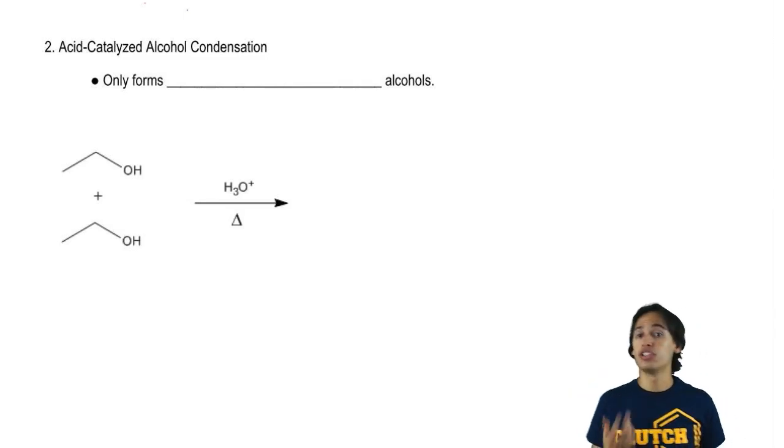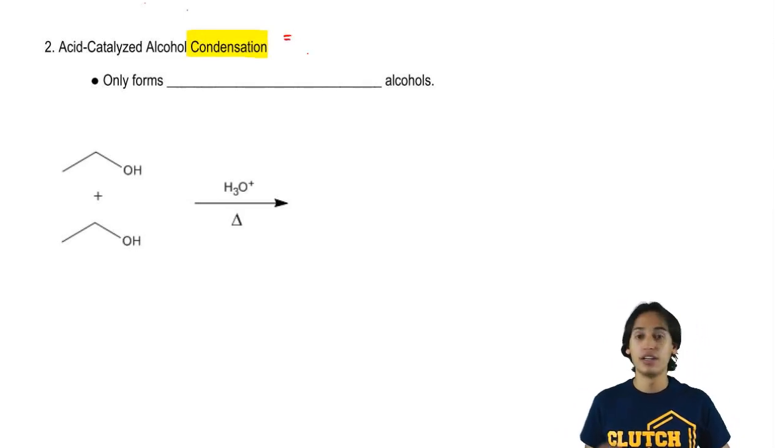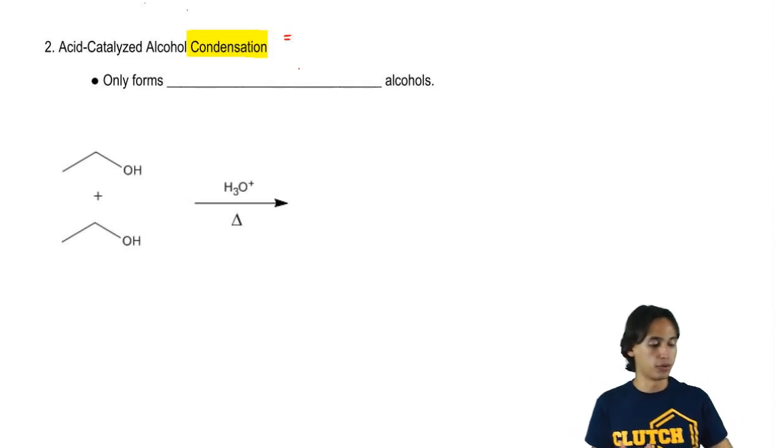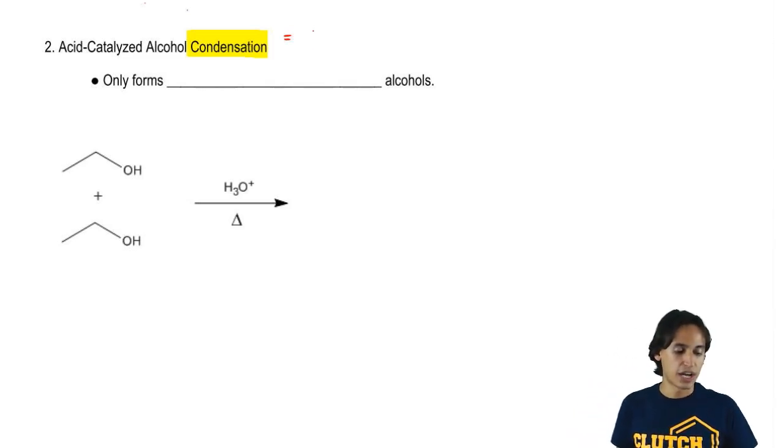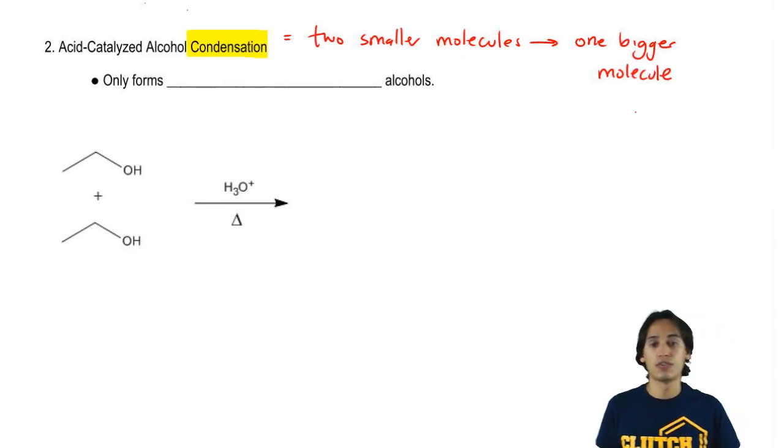As you guys will learn later in Orgo II, a condensation reaction is simply a reaction that takes two molecules and makes them into one bigger molecule. So I'm just going to say it's a reaction that takes two smaller molecules and then turns them into one bigger molecule. That's the definition of condensation.